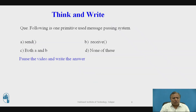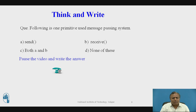Question for students — pause the video and write the answer. Which of the following is a primitive used in the message passing system? Options: A) Send, B) Receive, C) Both A and B, D) None of these. The correct answer is option C — both A and B. Send and receive are the primitives used in the message passing system.